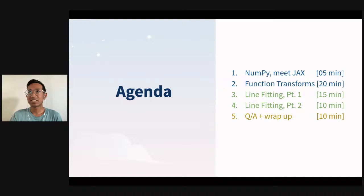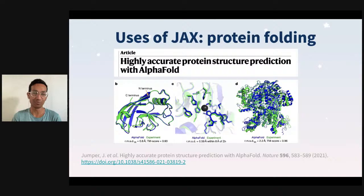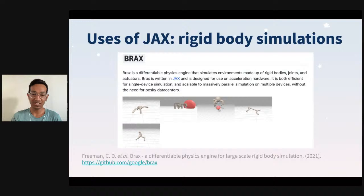So why JAX? There are other libraries too. JAX is already being used for really large real-world things — for example, AlphaFold, which came out this summer, used JAX as part of the project to build the model. JAX was used as a backend to something called the Haiku library, which in turn was used to build the protein folding models. JAX has also been used in physics simulations, like n-body simulations to simulate robots at extremely fast speeds on GPUs and TPUs — thousands of times faster than they would run on a CPU.